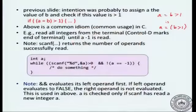Whatever is within parentheses will be evaluated first. So (a equal to b) will be evaluated first, and b is 2, so a will get the value 2. The assignment (a equal to b) will return the value 2, and 2 is greater than 1, so the body will be executed.